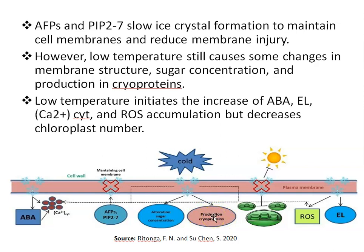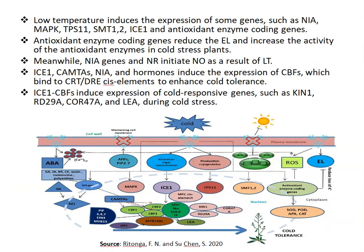Low temperature also initiates an increase in abscisic acid (ABA), ethylene, and reactive oxygen species (ROS) accumulation. In addition, there is a decrease in the number of chloroplasts. Low temperature then induces the expression of some genes.